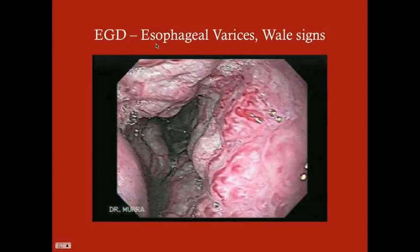This is called the wale sign — W-A-L-E, not whale like the fish. These esophageal varices recently ruptured, and these red spots are the wale sign, which is a sign of recent rupture.